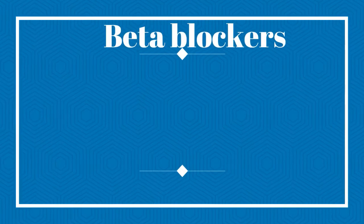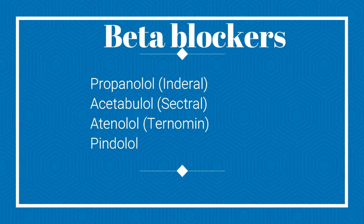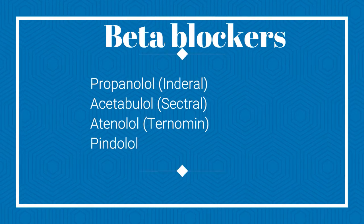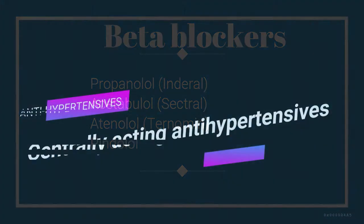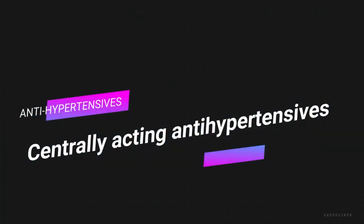Examples of beta blockers include propranolol, also known as Inderal; acebutolol, also known as Tenormin; and pindolol. The suffix for beta blockers is '-lol,' so whenever you see a drug ending in '-lol,' you know it is a beta blocker.